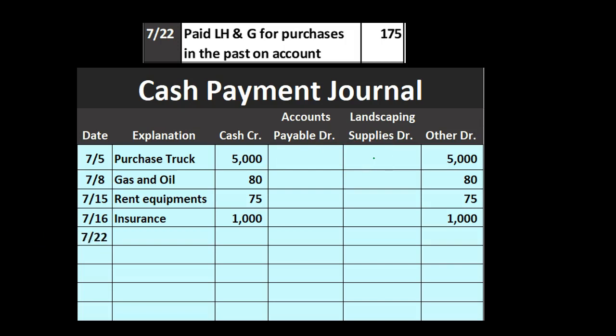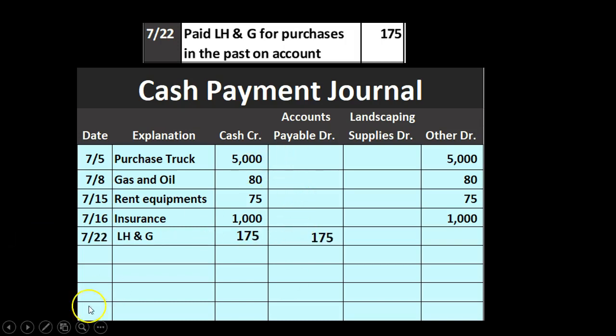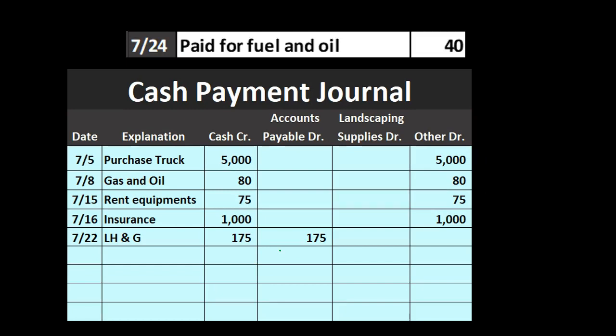On 7-22, we paid LH&G for purchases made in the past on account: $175. Cash goes down by $175, and the other side goes to accounts payable. This is one of the more common transaction types — accounts payable is going down. For a business that frequently purchases on account and makes payments, there would be many of these transactions with cash going down and accounts payable being debited.